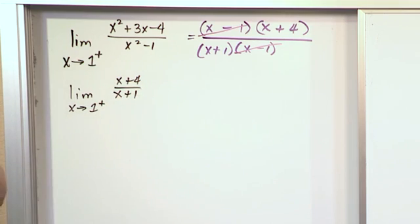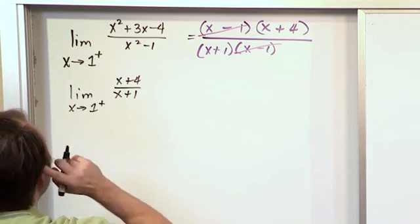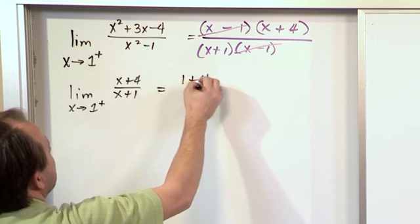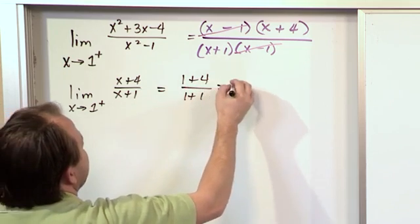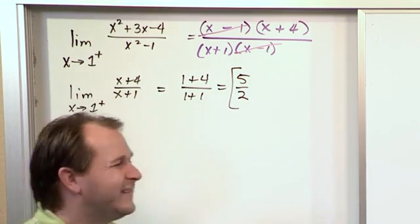Now there's no problem. If you plug it in, even though we're coming from the right, there's not going to be any discontinuity around the point of interest. So we just plug in 1 plus 4 over 1 plus 1 and we'll get 5 halves. And this is the answer, 5 halves.